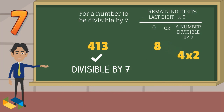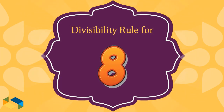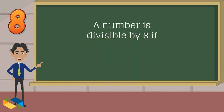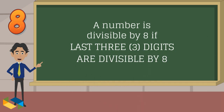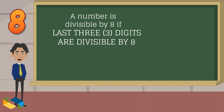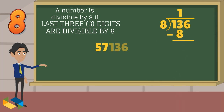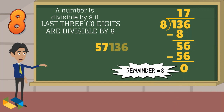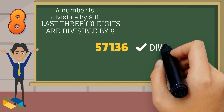Take another number, 84: doubling the last digit gives us 8, and subtracting it from the remaining digits gives us 0, so 84 is also divisible by 7. Now for the rule for 8: take the last three digits of any number and see if it is divisible by 8. If it is, then the entire number is also divisible by 8. In 57,136, the last three digits are 136, which is divisible by 8, so 57,136 is also divisible by 8.